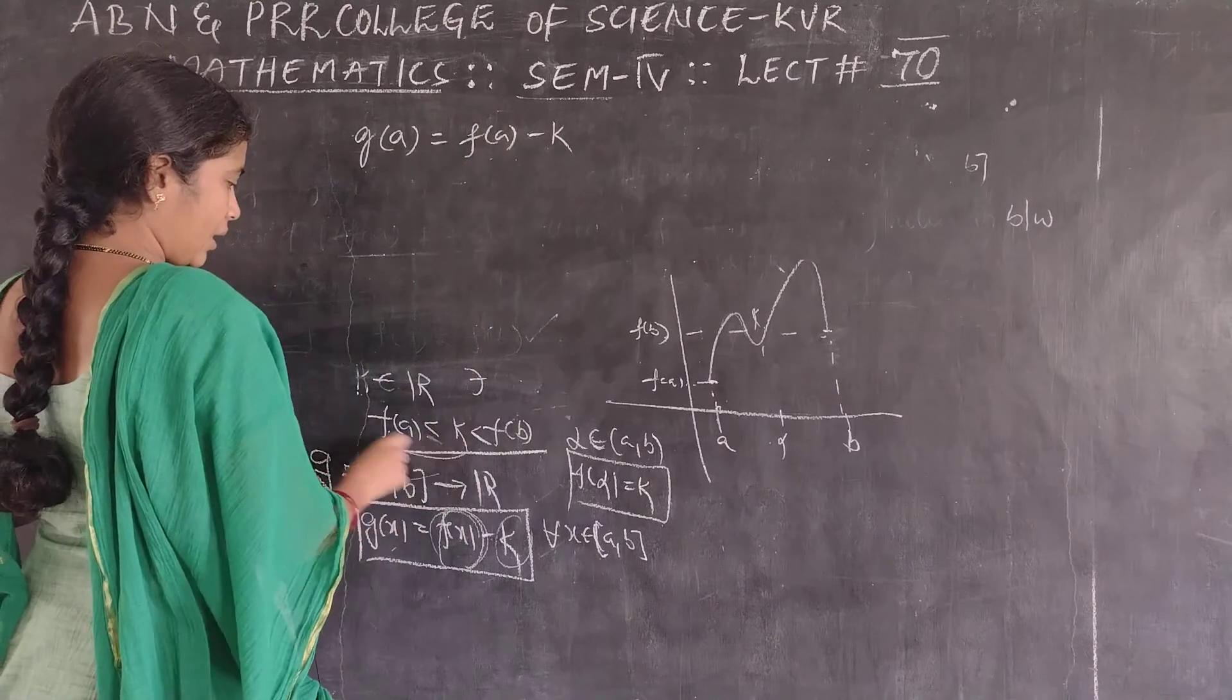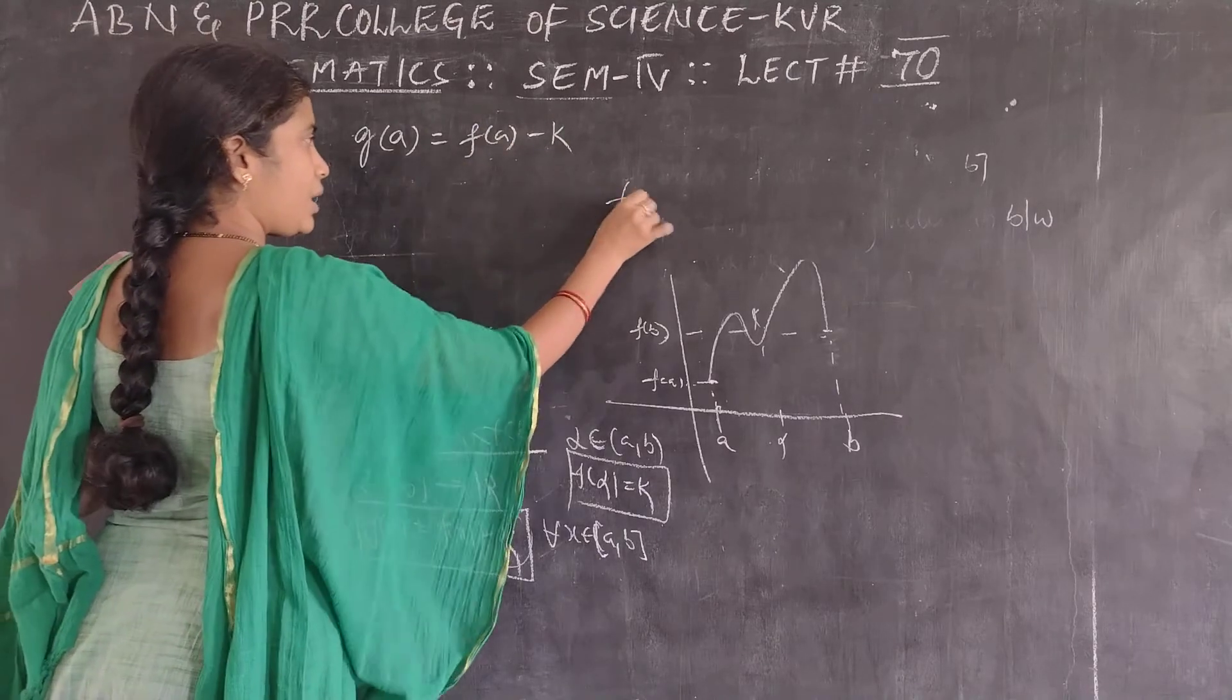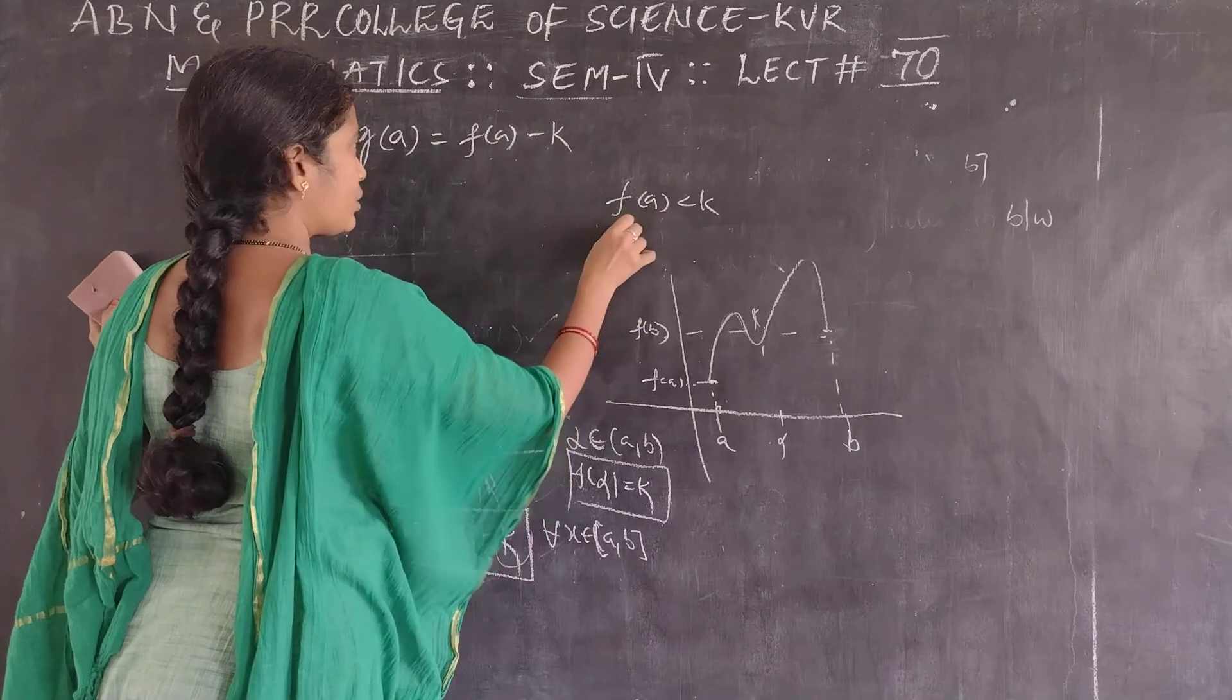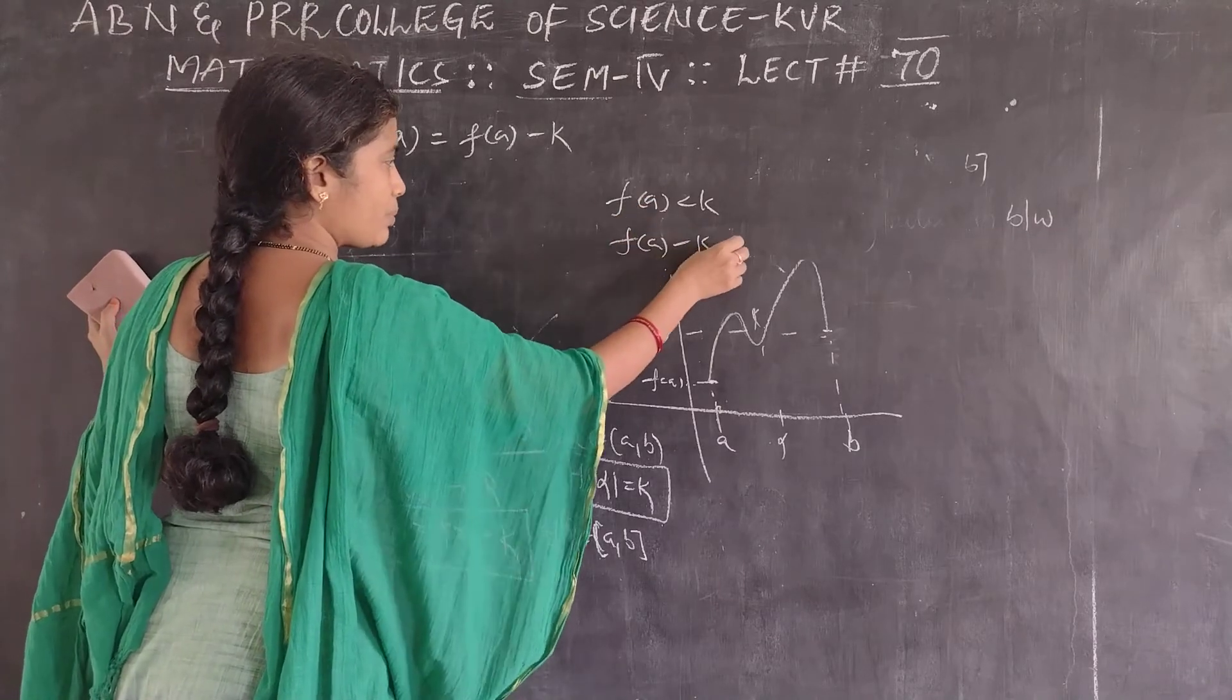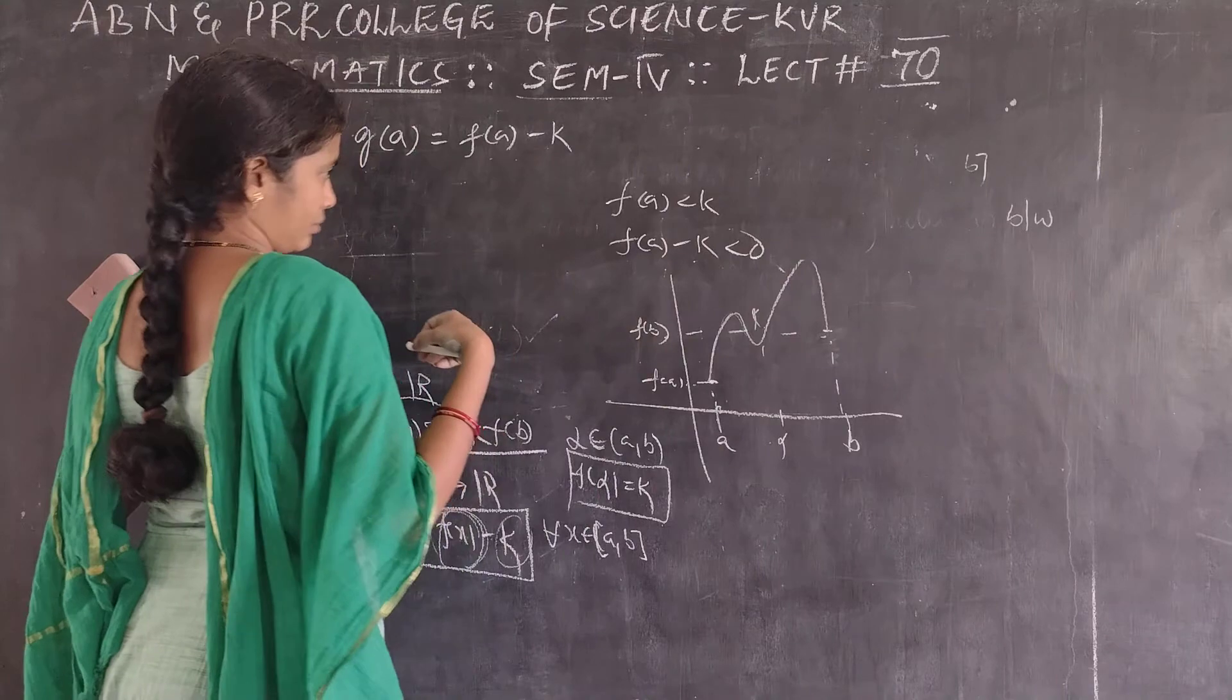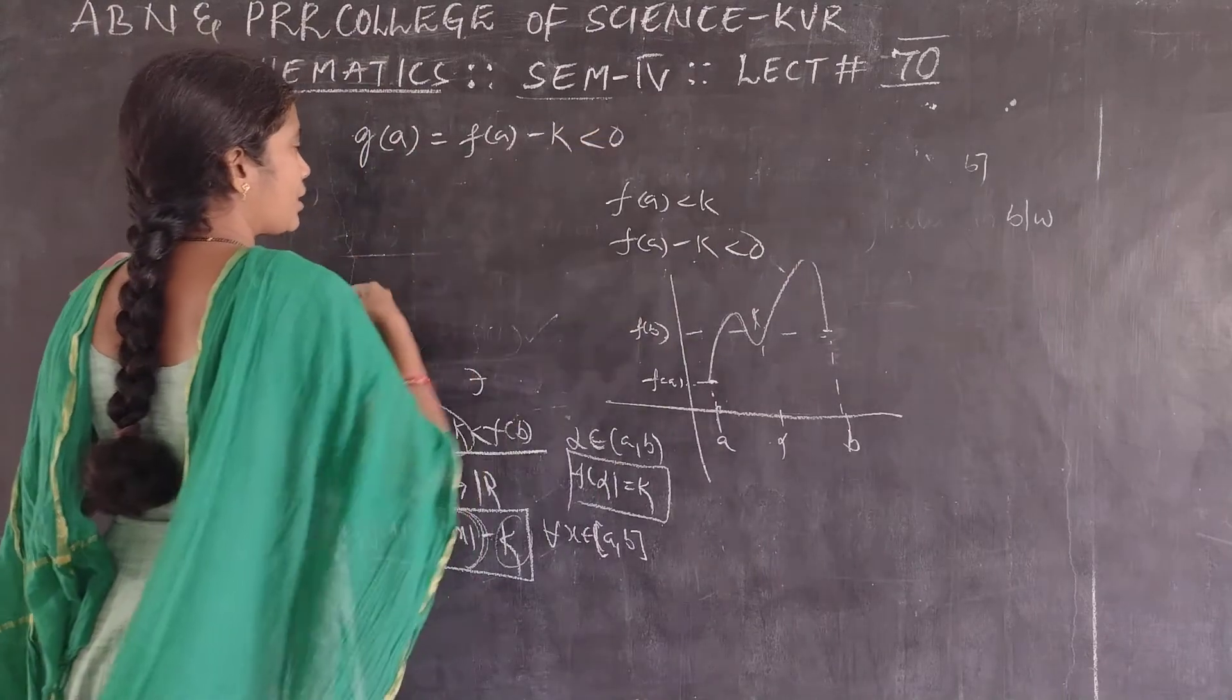Now, g of a is f of a minus k. Since f of a is less than k, f of a minus k will have a negative value. This is less than 0.